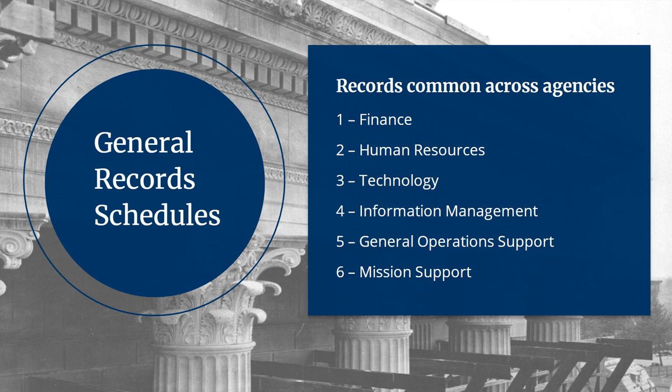The General Record Schedules are developed and approved by the National Archives. They are mandatory for all Federal agencies. The General Record Schedules cover records like budget, personnel files, travel, basic contracts, building maintenance, emergency planning, and security.